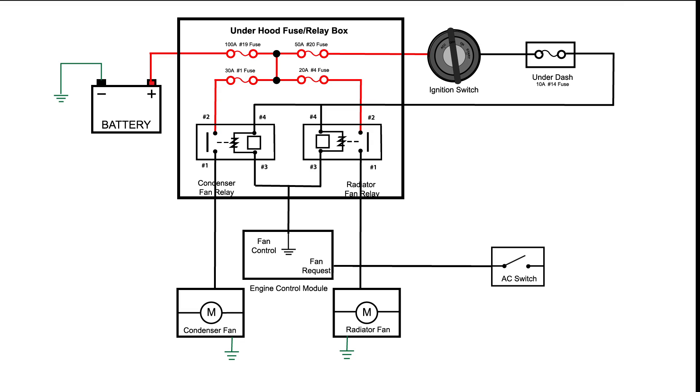As we look at the schematic, we see that when the AC switch is pressed on, it sends a command to the power control module to ground the radiator fan and condenser fan relays. These relays are powered by three different fuses: a 10-amp fuse under the dash when the ignition is on, and two fuses under the hood in the relay box - one 30-amp fuse for the condenser fan relay and one 20-amp fuse for the radiator fan.